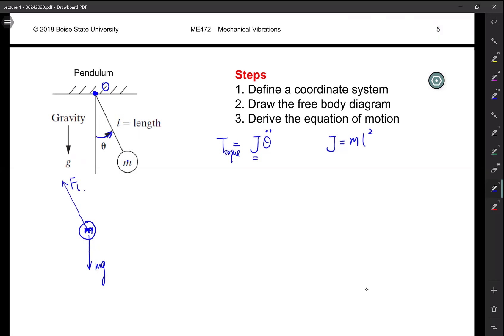Theta double dot, theta is the unknown, so we have to leave it there. The other thing is we just need to find the torque. This torque is around the pin point.